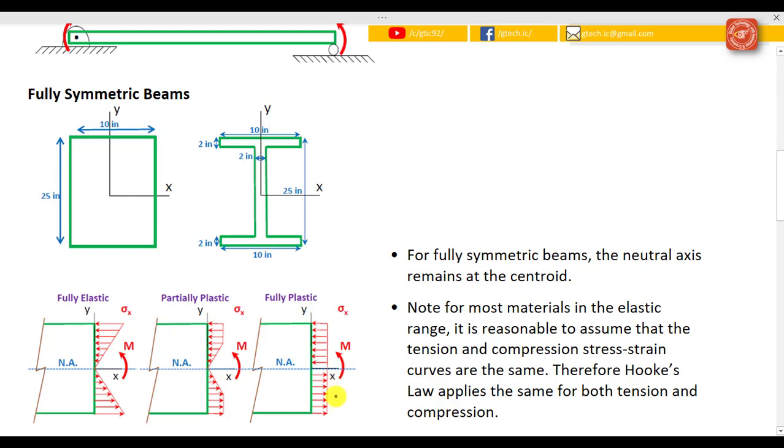I can go to the point where the beam becomes fully plastic, so the top is fully in compression and the bottom is fully in tension as shown here. If I go fully plastic then I'm not going to add any more load and the beam will become a plastic hinge and fail. For fully symmetric beams, the neutral axis in all three cases remains at the centroid.